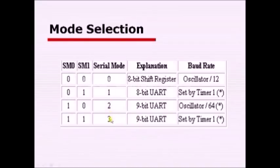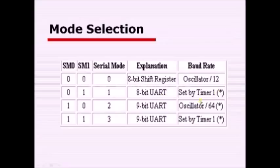The four modes are: Mode 0 — 8-bit shift register, baud rate calculated as oscillator divided by 12; Mode 1 — 8-bit UART set by Timer 1; Mode 2 — 9-bit UART; Mode 3 — 9-bit UART. Modes 2 and 3 are used for multiprocessor communication. In most applications, we use only Mode 1.